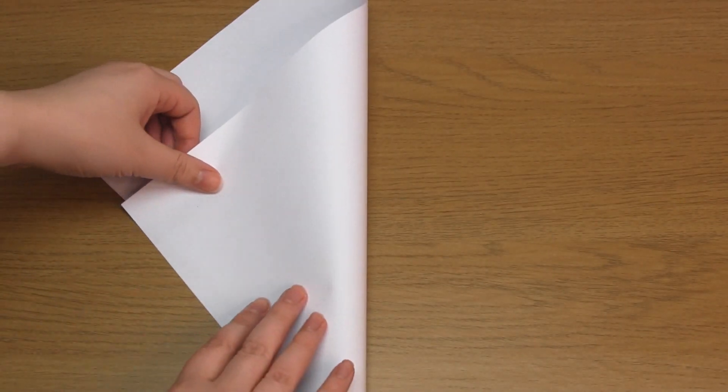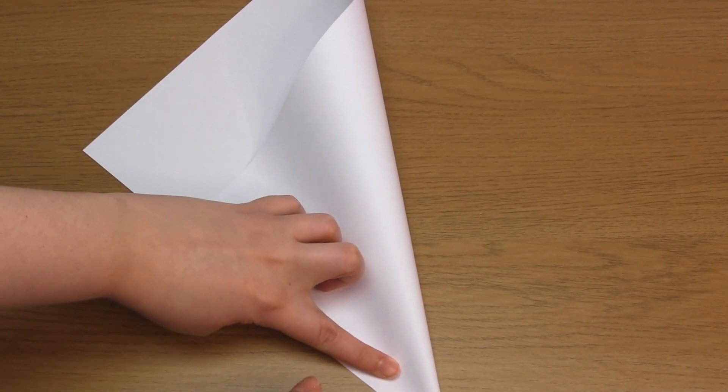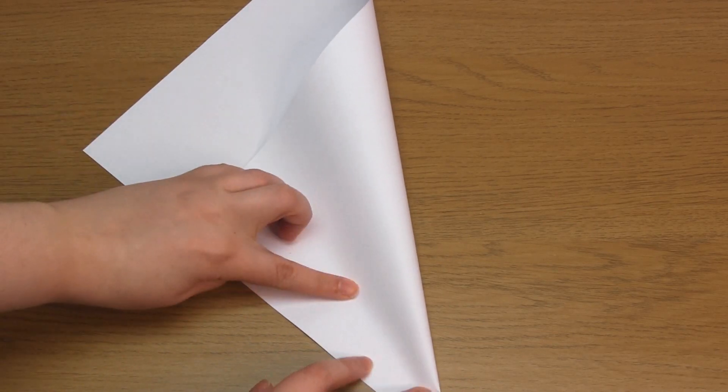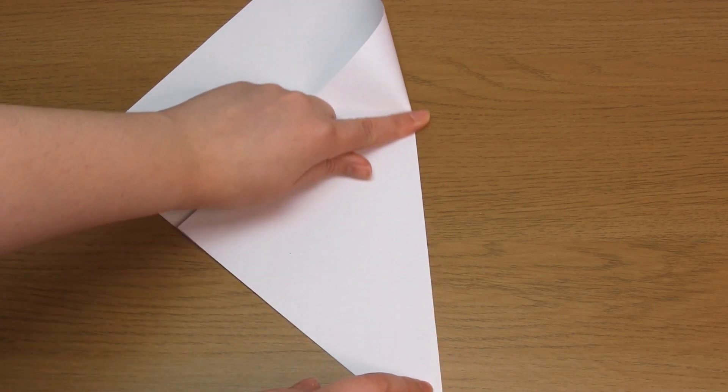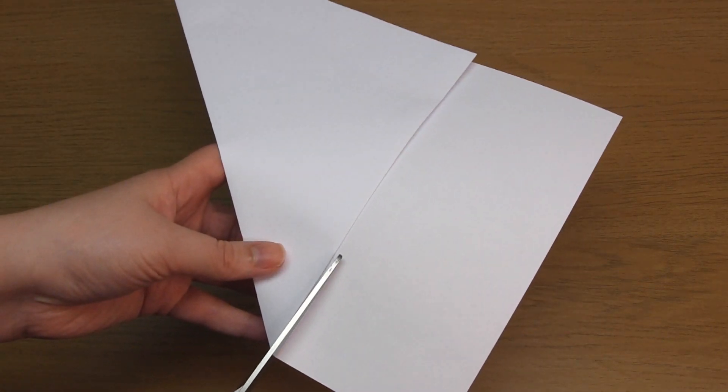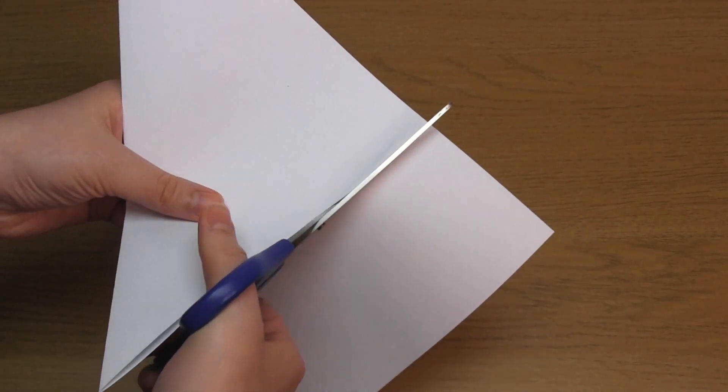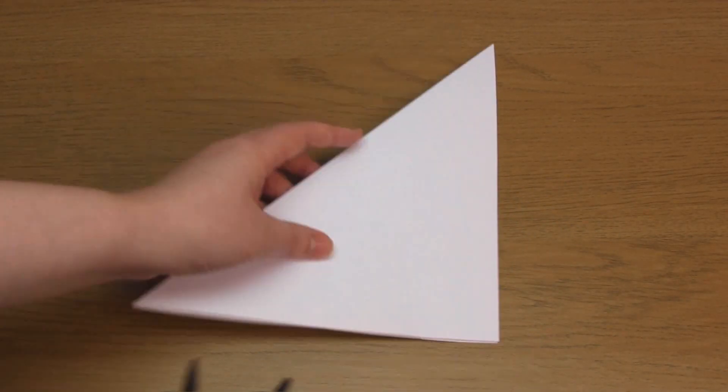Firstly, fold one corner diagonally so the edges line up, like so. Then cut off the excess paper, which is the single layer of paper that's just on the side. The result will be a square of paper. If you're starting with a square shape of paper, you can obviously skip this cutting step.